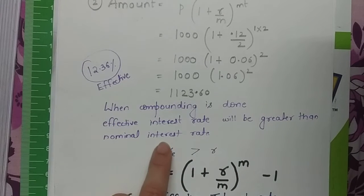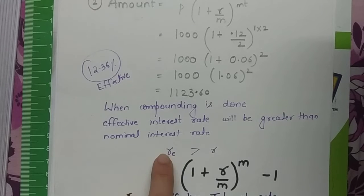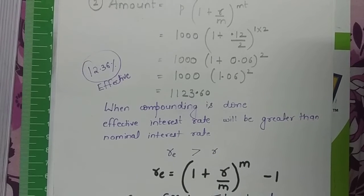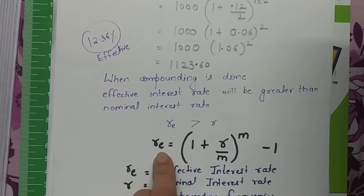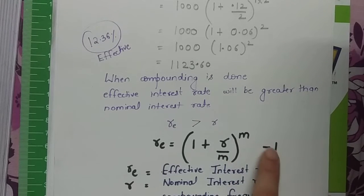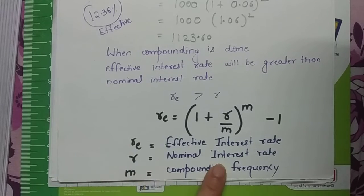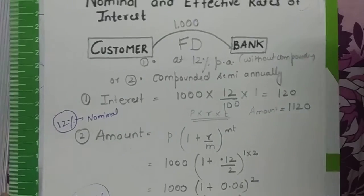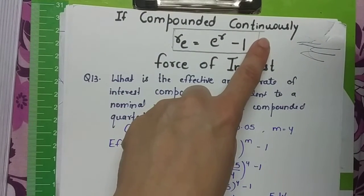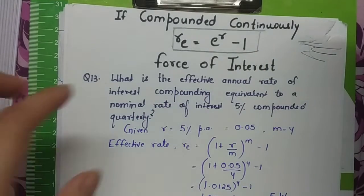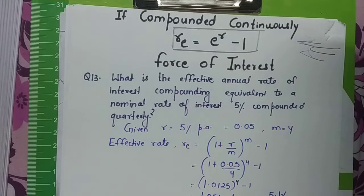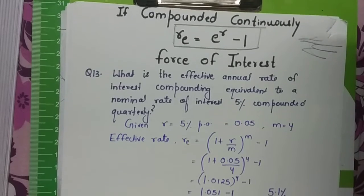When compounding is done, the effective interest rate RE is greater than the nominal rate R. RE is the actual rate the customer earns; R is the rate advertised by banks. The formula for effective rate is: RE = (1 + R/m)^m − 1, where m is the compounding frequency. For continuous compounding, the formula becomes RE = e^R − 1, also known as the force of interest.